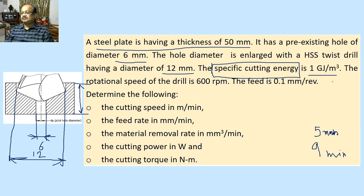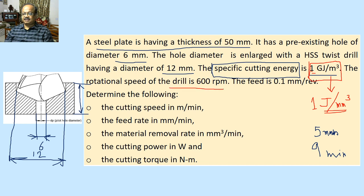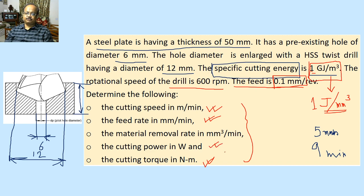We prefer the specific cutting energy to be mentioned in joule per millimeter cube. However, this is the SI unit, and the numerical value in front of the SI unit and joule per millimeter cube match. So if the specific cutting energy is given as 1 gigajoule per meter cube, it is also 1 joule per millimeter cube. The rotational speed of the drill has been given as 600 rpm and the feed is given as 0.1 millimeter per revolution. These are the five things you have to calculate: cutting speed, feed rate, cutting torque, and power.